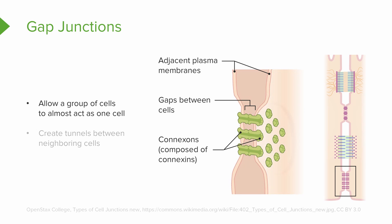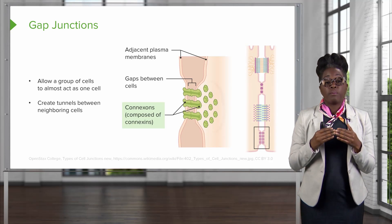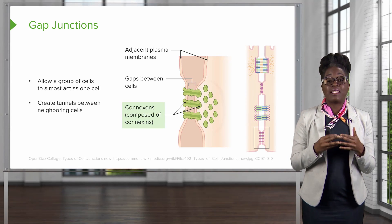Finally, we have gap junctions. Gap junctions are notable because they allow a group of cells to almost act as one singular cell. They allow communication between cells without the substance being communicated having to leave the cell, creating tunnels between neighboring cells. The protein involved in gap junctions is connexin.